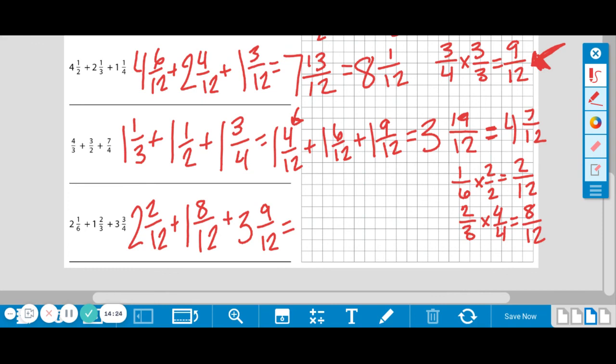Let's add them up. 2 plus 1 plus 3 is 6. Then our fraction—our denominator we know will stay the same. 2 plus 8 is 10, plus 9 is 19. So again, we have that awkward mixed number and an improper fraction all in one, so we need to change that.